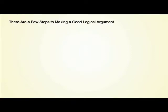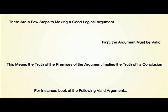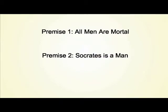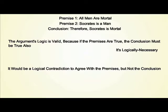There are a few steps to making a good logical argument. To start with, the argument needs to be valid. This means that the truth of the premises of the argument imply the truth of its conclusion. For example, look at the following valid argument. Premise 1: All men are mortal. Premise 2: Socrates is a man. Conclusion: Therefore, Socrates is mortal. The argument's logic is valid because if the premises are true, the conclusion must also be true with logical necessity. It would be a logical contradiction to agree with the premises but not the conclusion.